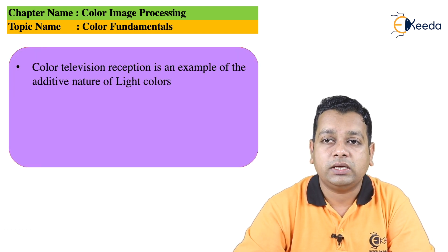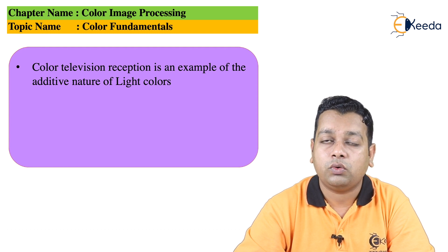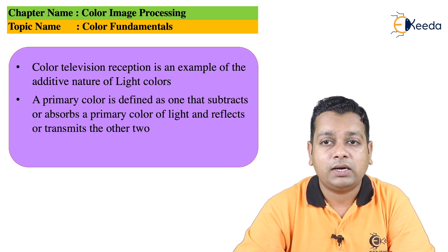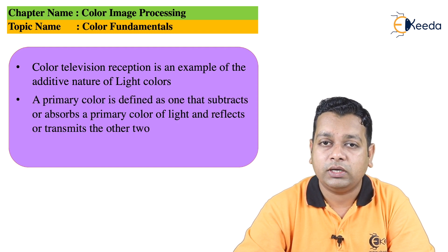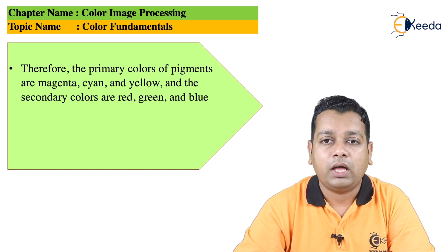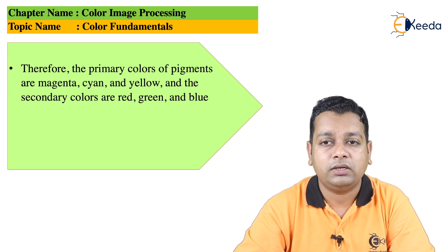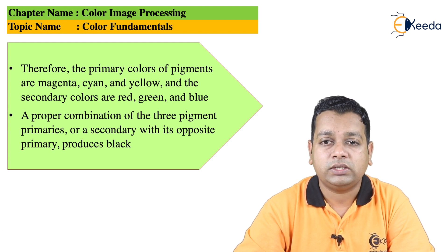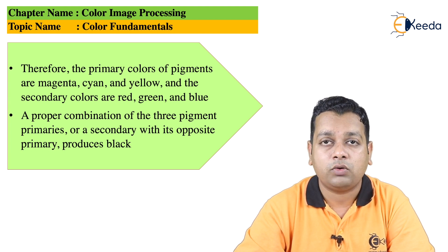Color television is an example of the additive nature of light colors. In pigments, a primary color is defined as one that subtracts or absorbs a primary color of light and reflects or transmits others. Therefore, the primary colors of pigments are magenta, cyan, and yellow, and their secondary colors are red, green, and blue. A proper combination of the three pigment primaries, or a secondary with its opposite primary, produces the black color seen on the right-hand side of the subtractive primaries diagram.